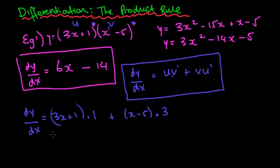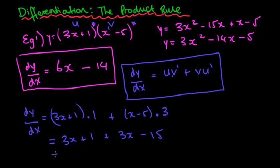Plus v, which is (x − 5) by itself, times u', so if I differentiate 3x + 1 we just get 3. So we've got 1 times 3x which is 3x, and 1 times 1 is 1, plus 3 times x is 3x, minus 3 times 5 is 15. Which gives us 3x + 3x = 6x, and 1 − 15 = −14. You've got the same answer.